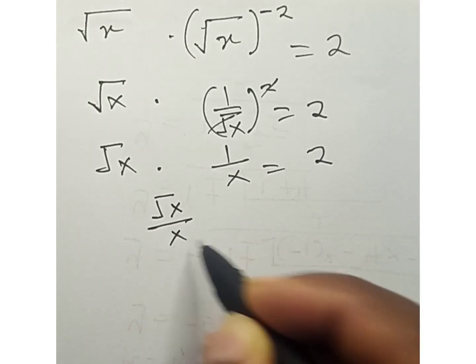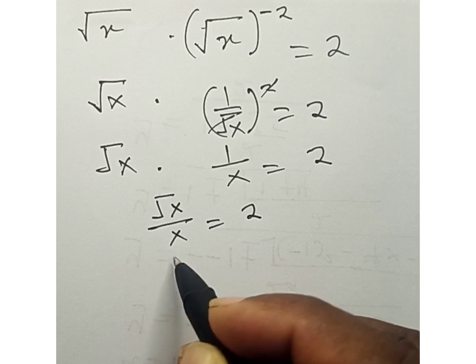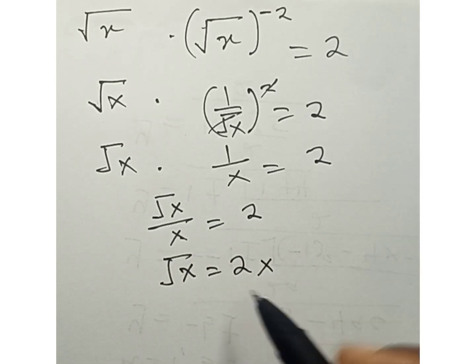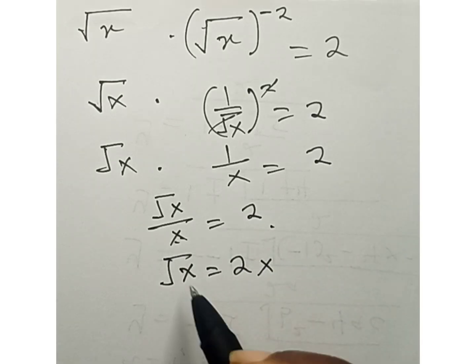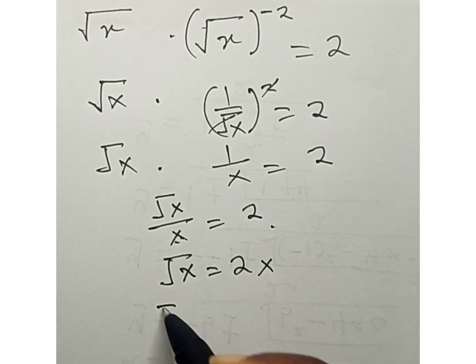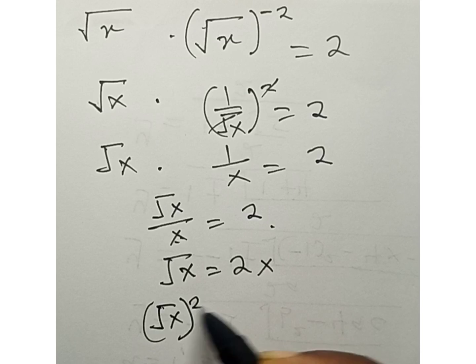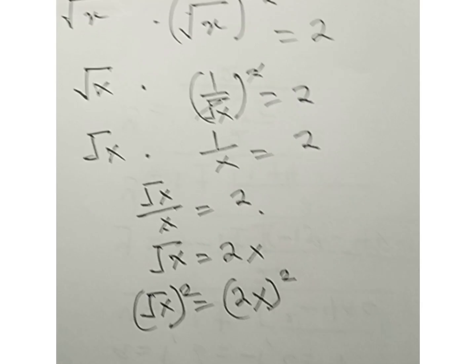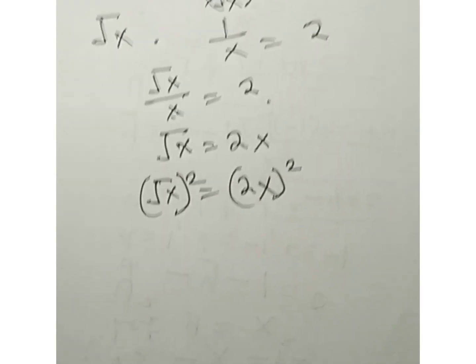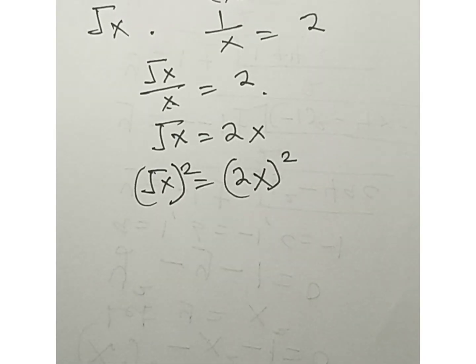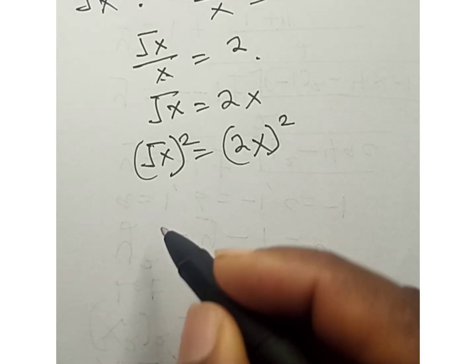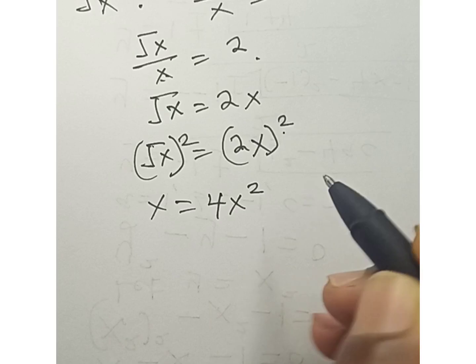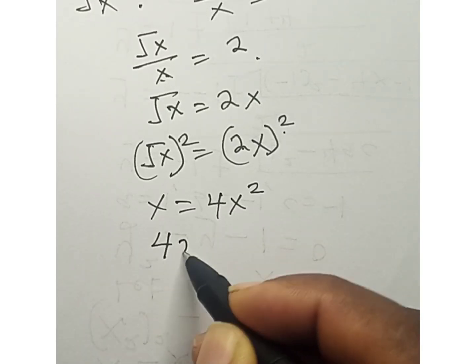times 1 over x equals to 2, means √x equals to 2x. 2 times x, so square both sides: (√x)² = (2x)². So what are we going to have now? We're going to have x equals to 4x². So 4x²